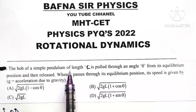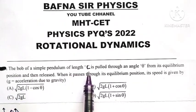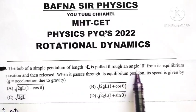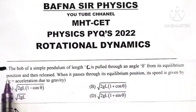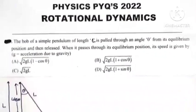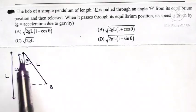The bob of a simple pendulum of length L is pulled through an angle theta from its equilibrium position. Here we have a pendulum.